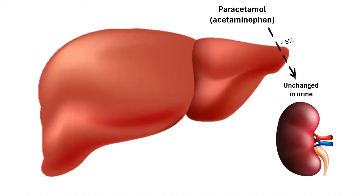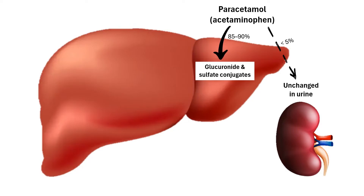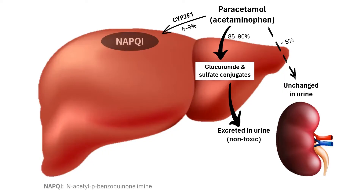Paracetamol is primarily metabolized through the formation of glucuronide and sulfate conjugates, which are subsequently eliminated through urine. A small percentage is metabolized by CYP2E1 to the reactive intermediate called N-acetylbenzoquinone amine, or NAPQI. Under normal circumstances, a small amount of NAPQI is formed during paracetamol metabolism.